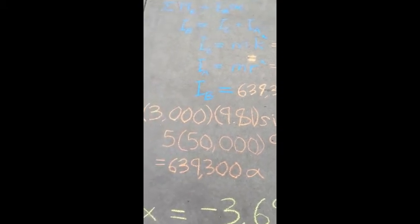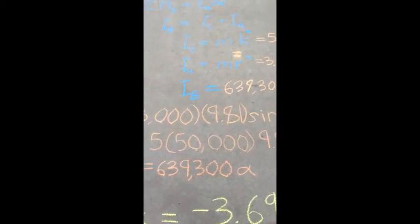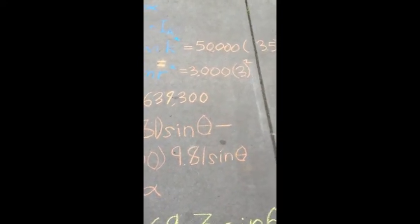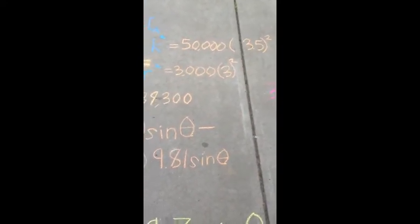Over here we have I of A, which is for the point mass at A. That's our mass times radius squared, which is 3,000 kilograms times 3 meters squared.